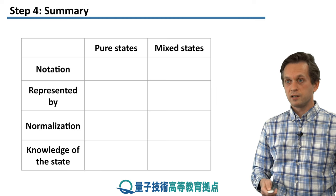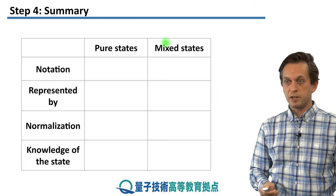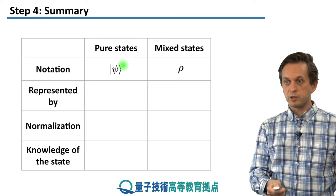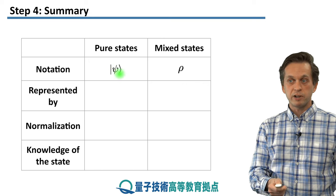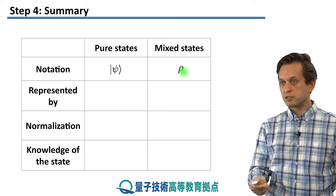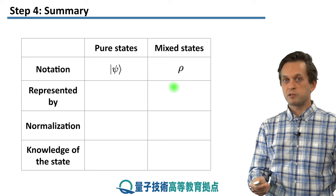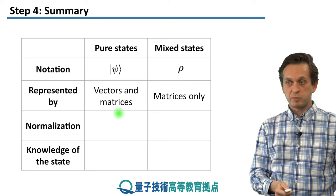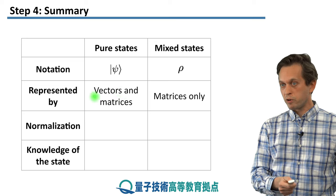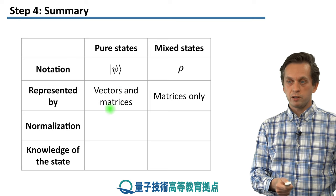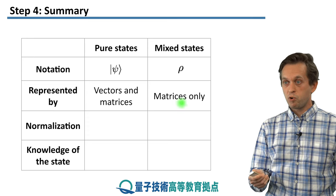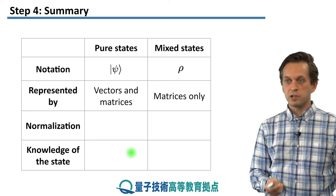So, to summarize the differences between pure states and mixed states. In terms of notation, pure states we always write with this ket symbol, these angled brackets, and we use Greek letters like psi or phi, whereas the mixed states we write without these angled brackets, because they cannot be written as a superposition of kets. Pure states can be represented by vectors and matrices. It's up to you and the problem that you're facing, whether the more appropriate description is in terms of vectors or in terms of matrices. Whereas the mixed states can only be represented with matrices. There's no way of writing down a mixed state using only vectors.